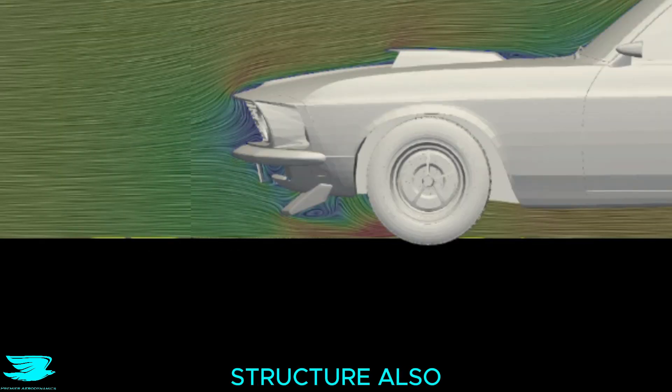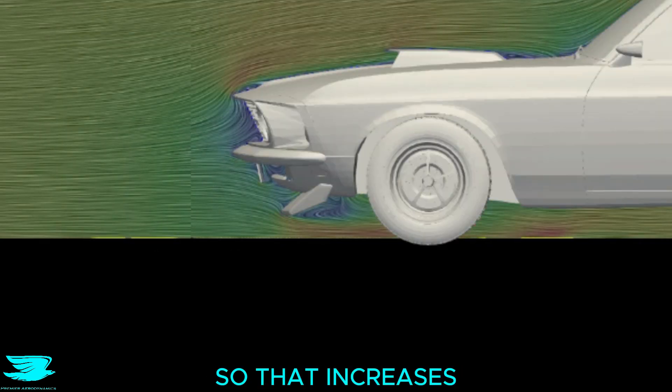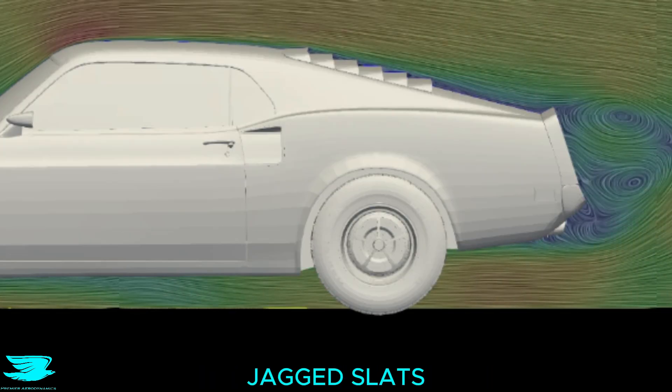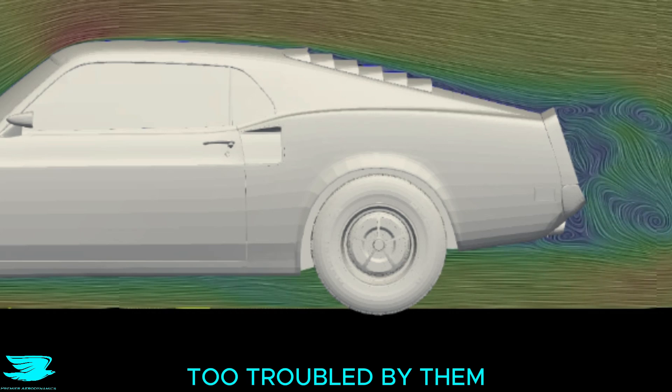The front aerodam-like structure also creates a big wake, so that increases the drag in this region. But I'm a little surprised that over the back window, with all these jagged slats, the flow isn't too troubled by them.